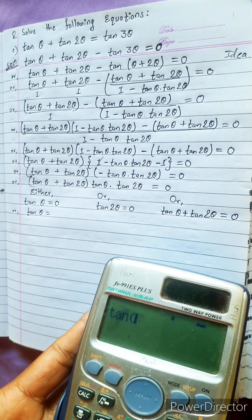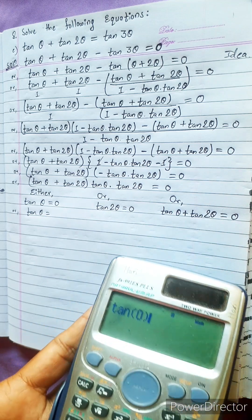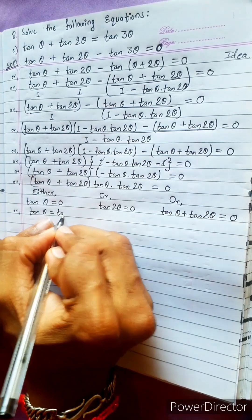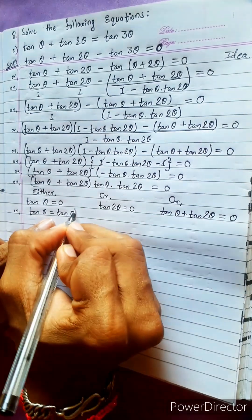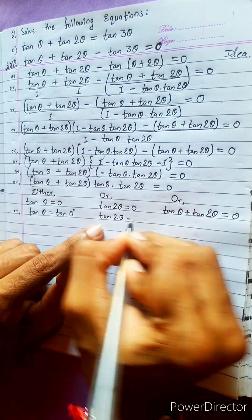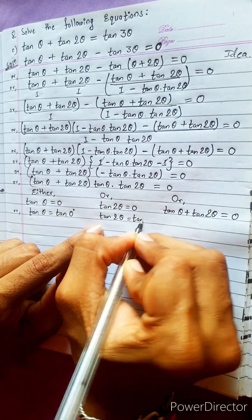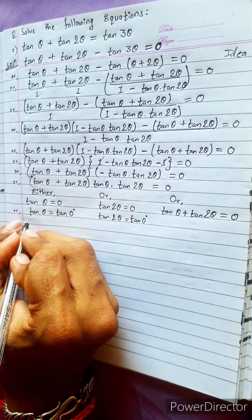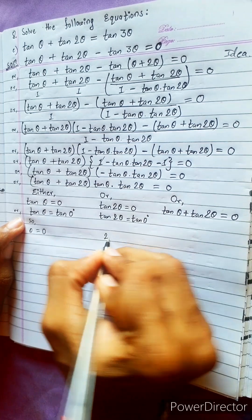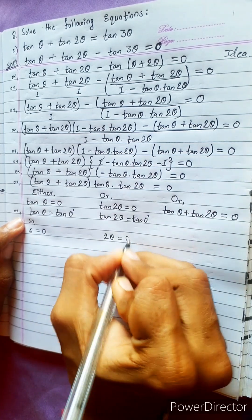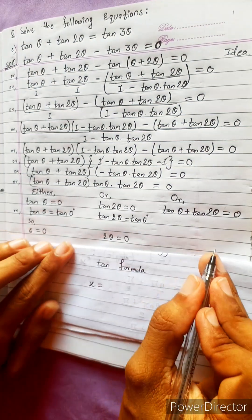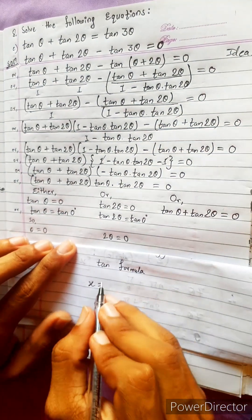tan 90° is not 0, but tan 0° is 0. So for the first case: tan θ = tan 0°, which gives θ = 0. For the second case: tan 2θ = tan 0°, which gives 2θ = 0. Now we know the general solution formula for tangent.